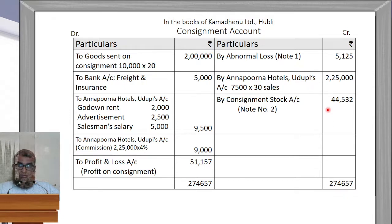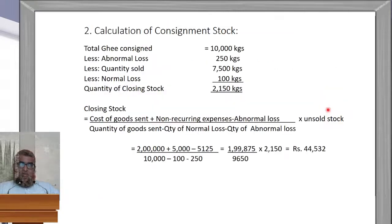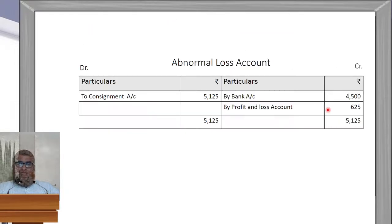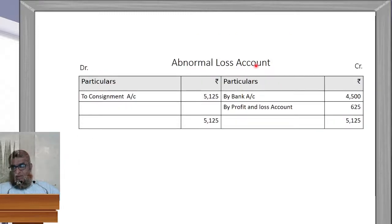Hope you have understood the consignment account clearly. You should work it out step by step, and if you have any doubt, you can clarify. Now we will prepare the next ledger: the Abnormal Loss Account. In the consignment account we already wrote 'By Abnormal Loss Rs. 5,125,' so it comes here as 'By Abnormal Loss, Rs. 5,125.'